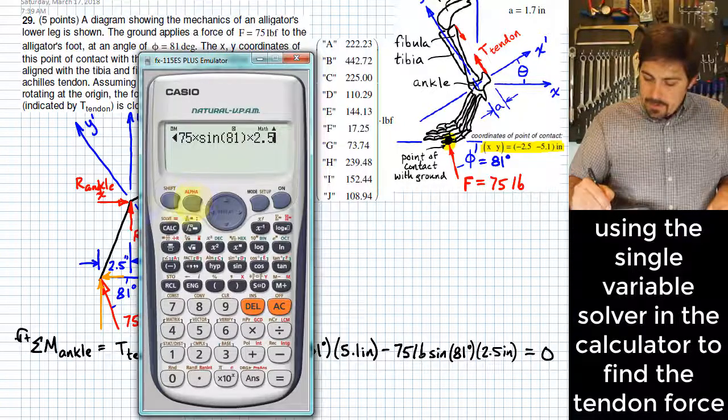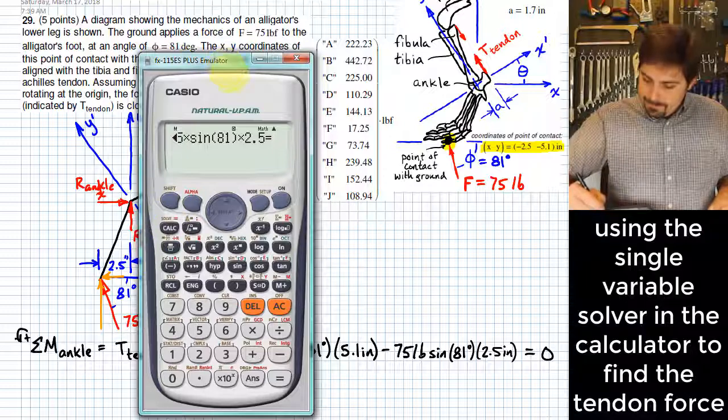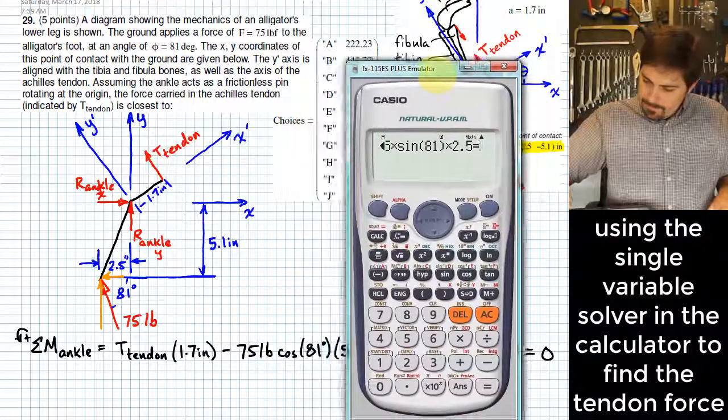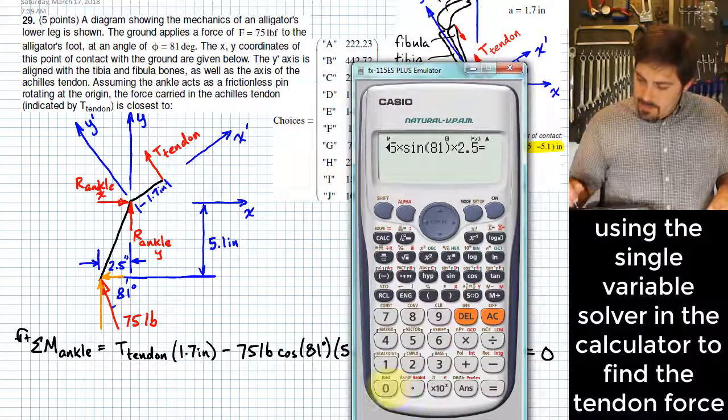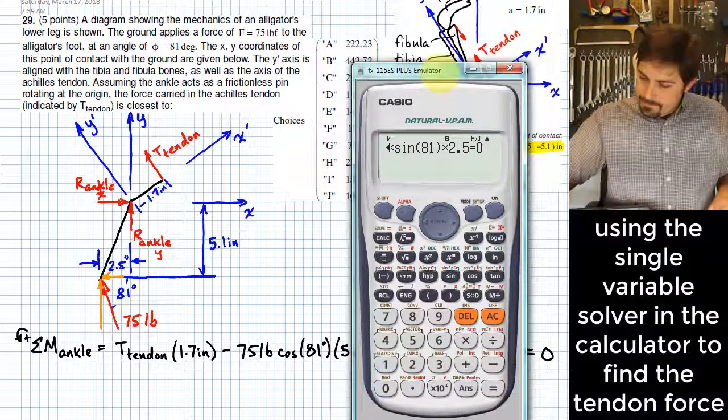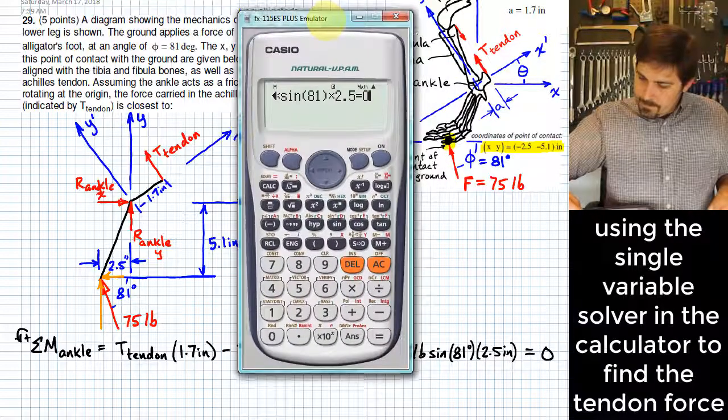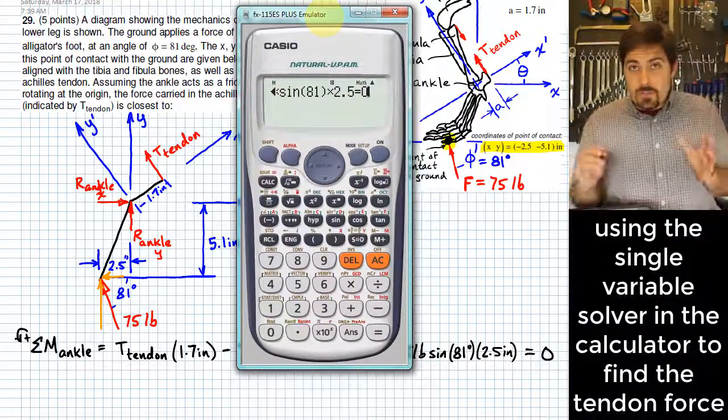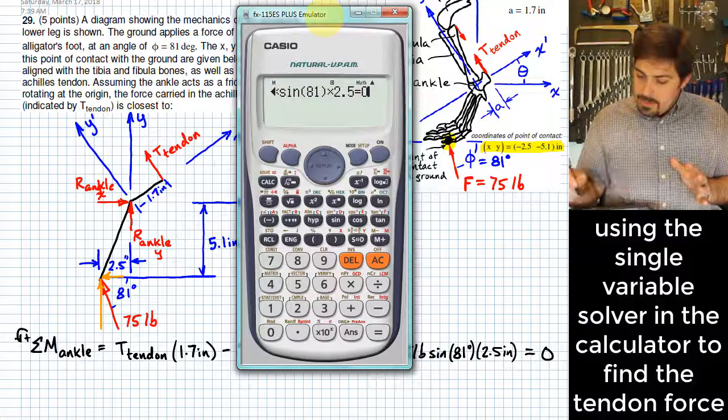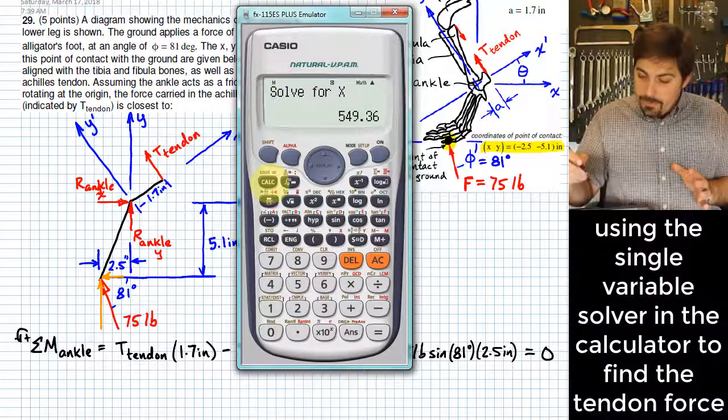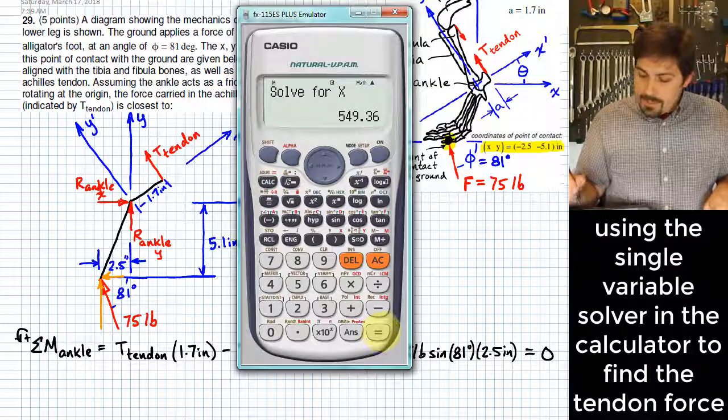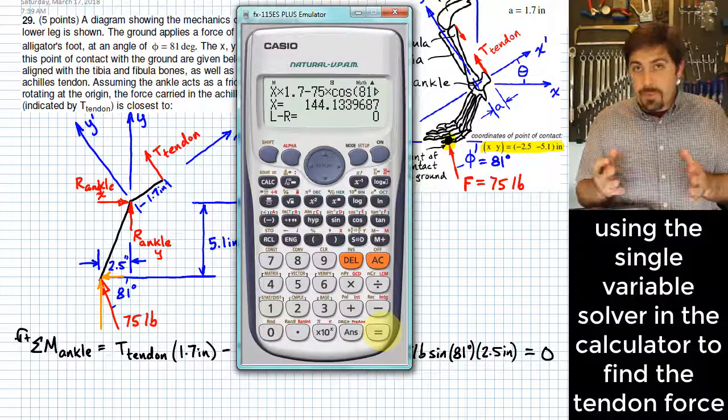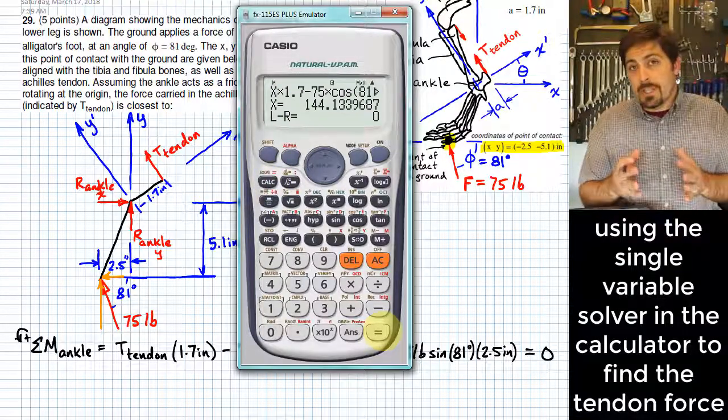Now this is the left side of the equation. What we're going to do is set this equal to 0, so I hit alpha equals and put a 0 in there. All right. And so what we're going to do now is just hit shift solve and we'll solve for x.